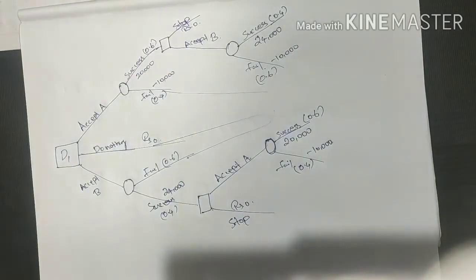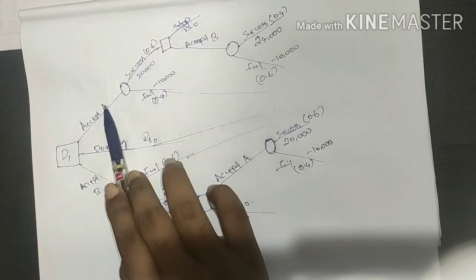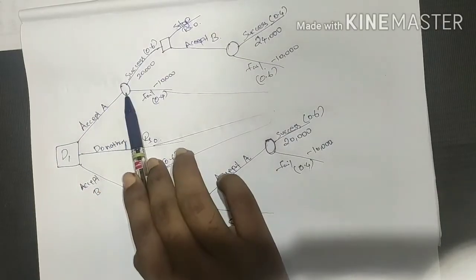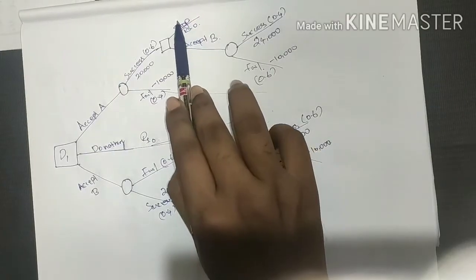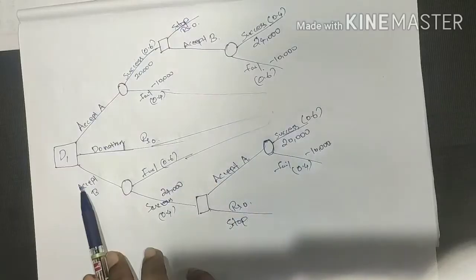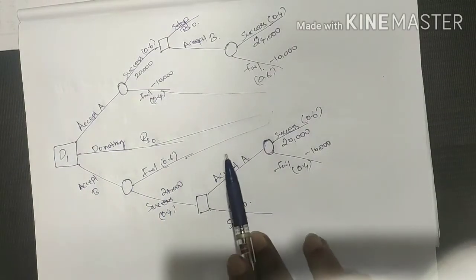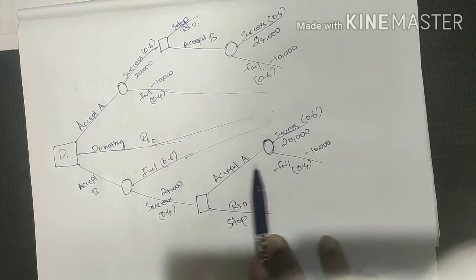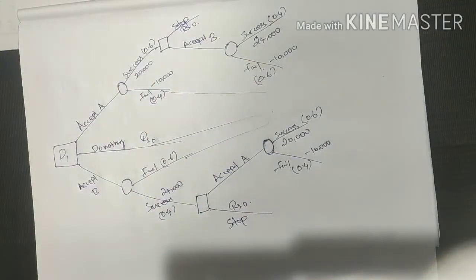So here is the decision tree. There are three options: accept A, accept B, or do nothing. For invest A, there are success and fail branches. If A is successful, we can then accept B or stop. B accept also has success and fail sub-branches with associated probabilities and returns.